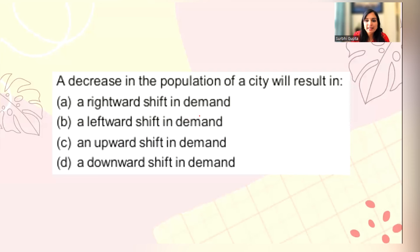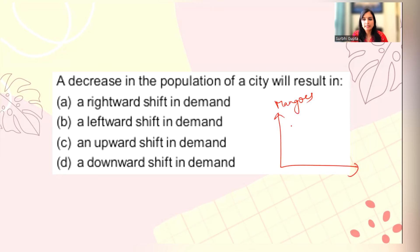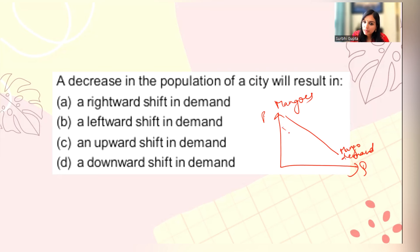Next question: a decrease in population of a city will result in what? If the population in a city decreases, suppose there are mangoes whose demand was very high. If the population suddenly decreases, the demand for mangoes will also decrease. So what will happen? There will be a leftward shift in the demand curve.